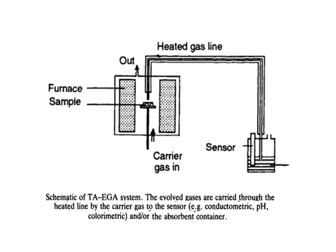Here is the schematic diagram of a thermogravimetry and evolved gas analysis system. There is a furnace compartment with a sample holder, a carrier gas inlet and outlet to maintain the internal environment. Heat is provided to the sample, changes occur, and products are emitted as gases. These gases move through a heated gas line into a compartment containing sensors — conductometric, pH, or colorimetric detectors — by which evolved gases are analyzed, or absorbers may absorb the gases for further analysis.